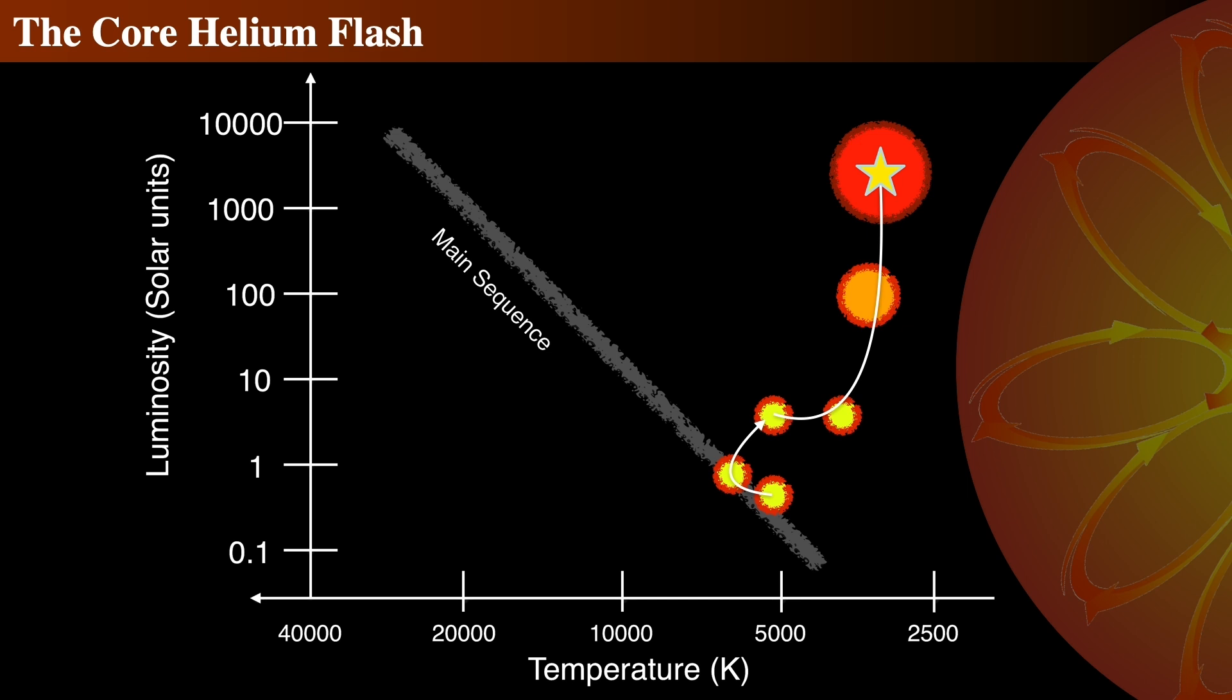At this point an interesting difference arises between the evolution of stars with masses greater than about 1.8 solar masses, and those with masses less than 1.8 solar masses.